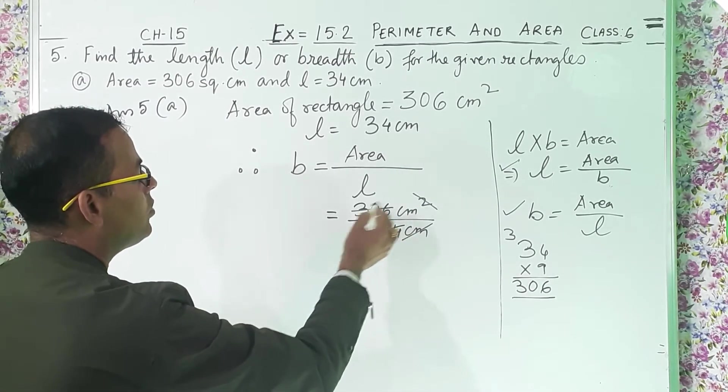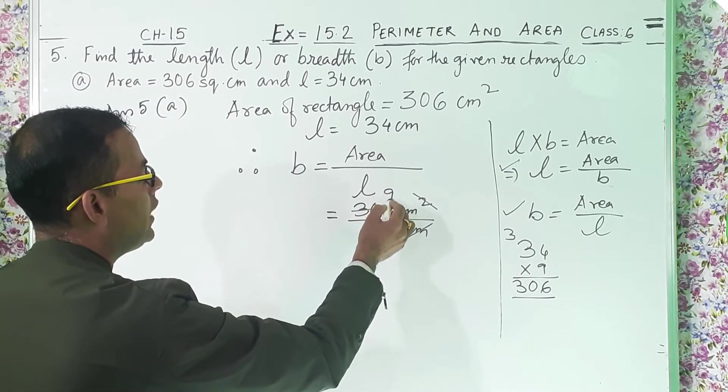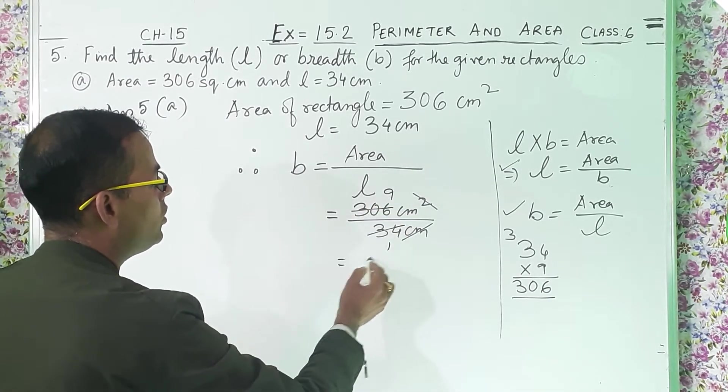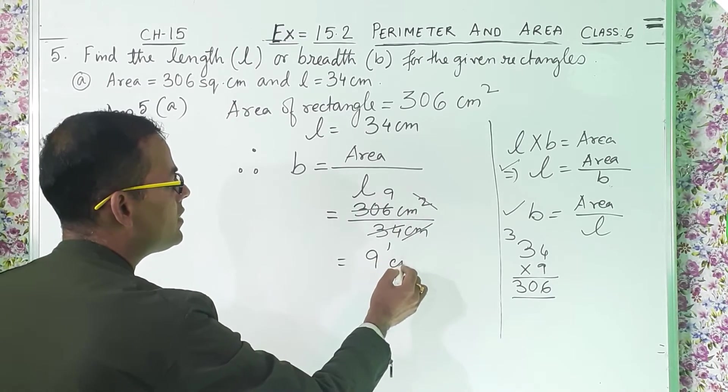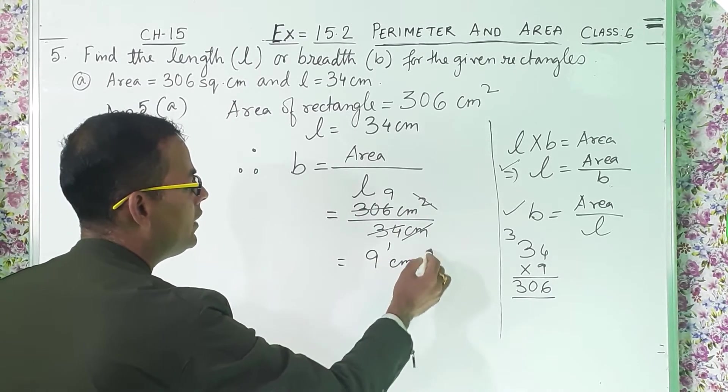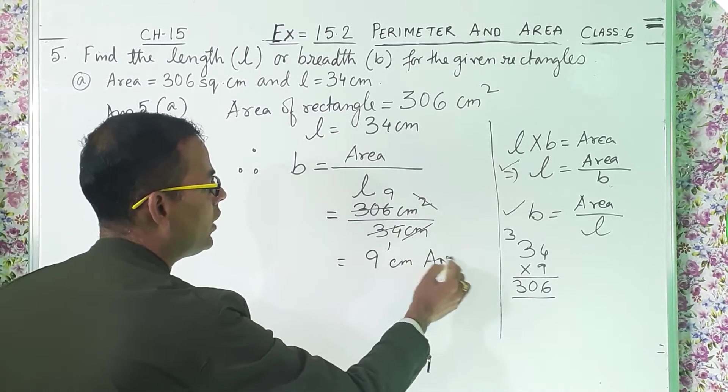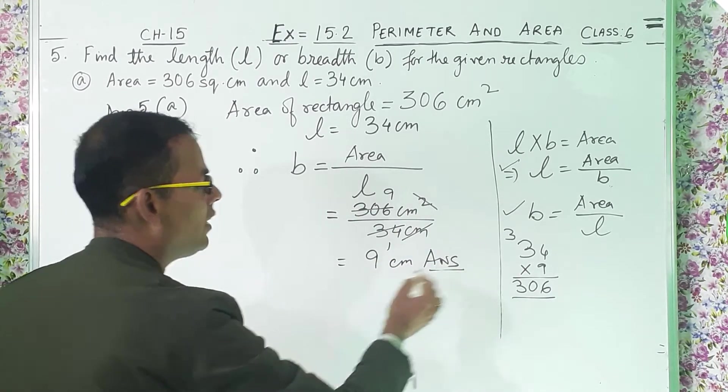34 nines are 306, so you got 9 centimeters and this is the answer.